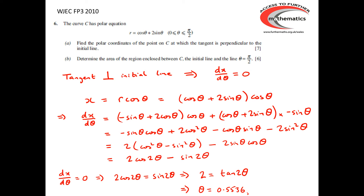So θ = 0.5536 radians. It's fairly obvious that we want to be using radians because the whole question is set up in radians. If θ = 0.5536, then r = 1.902, giving the polar coordinates of the required point.